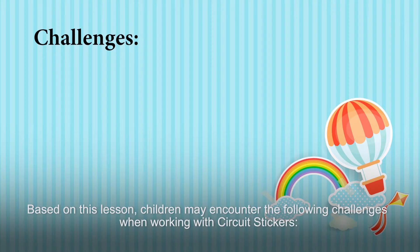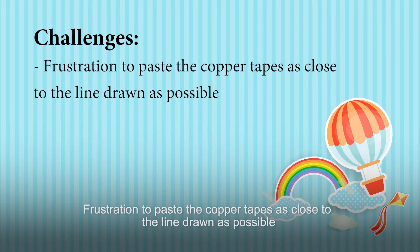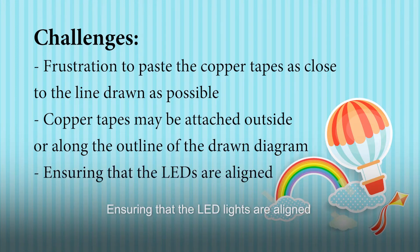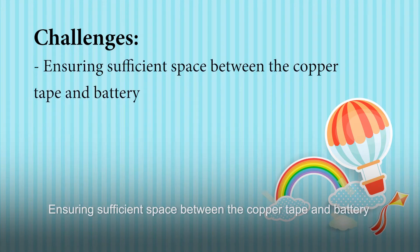Based on this lesson, children may encounter the following challenges when working with circuit stickers: frustration when pasting the copper tapes as close to the line drawn as possible; copper tapes may be attached outside or along the outline of the drawn diagram; ensuring that the LED lights are aligned; and ensuring sufficient space between the copper tape and battery.